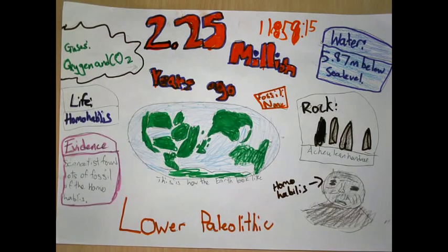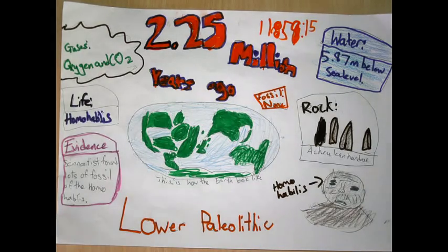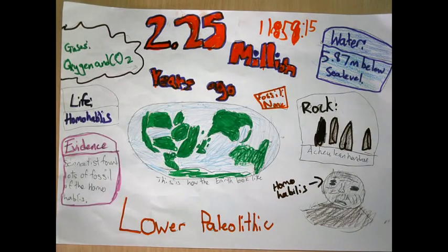2.25 million years ago, at 11 hours 59 seconds, the gases were oxygen and CO2. It was the lower Paleolithic time period, and scientists found fossils of Homo habilis. The water was 5.87 meters below sea level, and there were no other fossils.